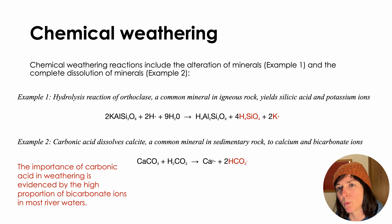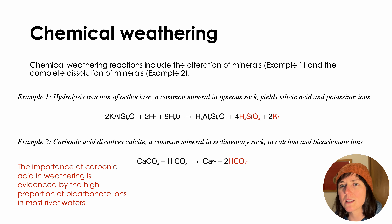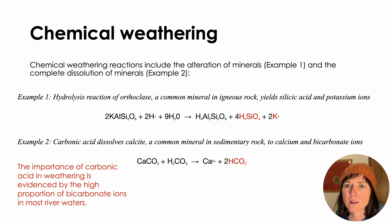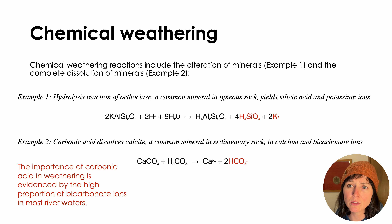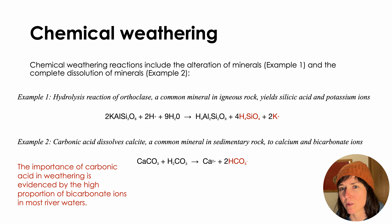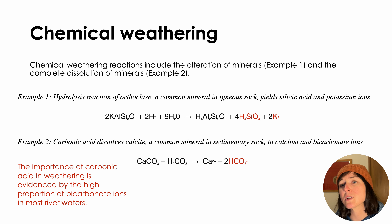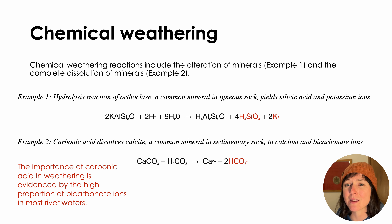Here's an example of how chemical weathering leads to ion delivery in fresh waters. Example 1 is a hydrolysis reaction of orthoclase, a common mineral in igneous rock. This yields silicic acid and potassium ions, which could then be delivered to a nearby river or stream. Example 2, carbonic acid dissolves calcite, a common mineral in sedimentary rock. This yields calcium and bicarbonate ions. The importance of carbonic acid in weathering is evidenced by the high proportion of bicarbonate ions in most river waters.